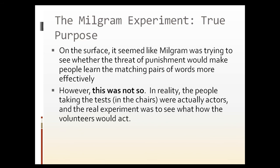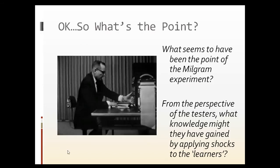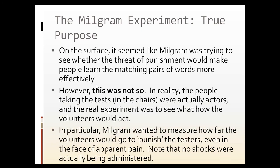What was actually happening was that the people being tested were not the people in the chair. It was always the same man in the chair, and he wasn't actually being shocked at all. When the experiment ran, he would get out of the chair, hook up a microphone, and hook up a tape recorder with a pre-recorded series of responses. Who was actually being tested was the teacher — the person who thought they were running the experiment. The question being asked was how far would they go, particularly as the learner showed signs of pain and discomfort.